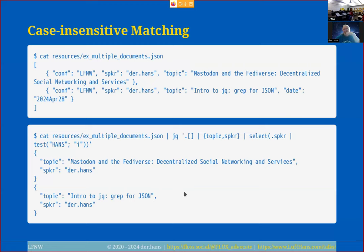An audience member comments that ChatGPT is useful for JQ — you describe what you want to do with the expected input and output, and while it doesn't always work perfectly, it gives useful direction. Another question: can you do operations like awk inside a JQ command — like making everything uppercase? Yes, you can do a lot of that in JQ itself, including capitalizing, lowercasing, and so forth. There are plenty of built-in functions, and you can potentially make system calls within your JQ pipeline.